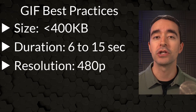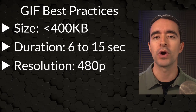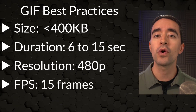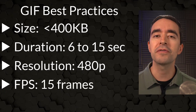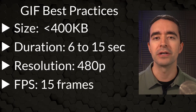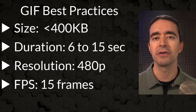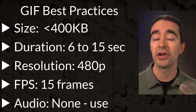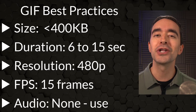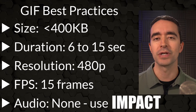Number three, resolution — keep it low, like 480. Number four, frames per second — the fewer the frames the better; start with 15 and go down from there. And number five, audio — there is none. Use a large font like Impact for text.